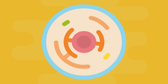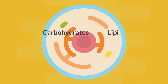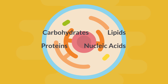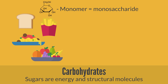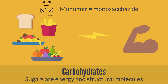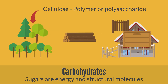Cells consist of four main groups of carbon-containing macromolecules: carbohydrates, lipids, proteins, and nucleic acids. Carbohydrates are sugars that have multiple functions and are important as an energy source, and they're structurally very important for many living organisms. For example, cellulose is an important structural fiber for plants.